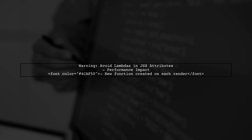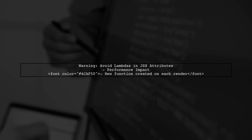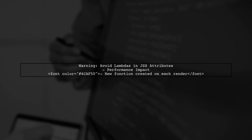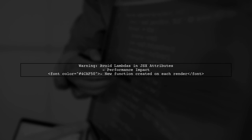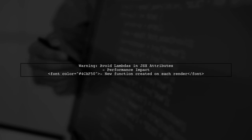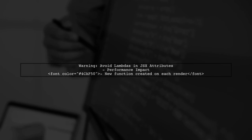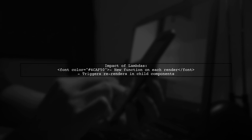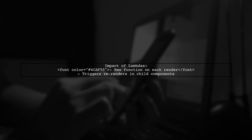Now let's continue on. Let's address the warning about using Lambdas in JSX attributes. The linter suggests avoiding them due to performance issues. When you use a Lambda function in JSX, like in your example, a new function is created every time the component renders. This can lead to unnecessary re-renders of child components.